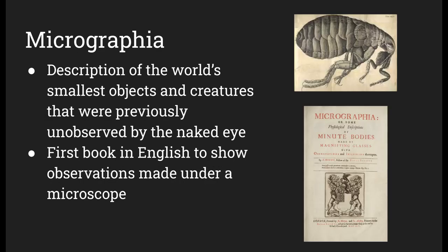Micrographia is one of the books he published. It contains descriptions and illustrations of the world's smallest objects and creatures that were previously unobservable by the naked eye — you'd have to look through a microscope. It was also the first book in English to show observations made under a microscope. The image on the top right is an illustration included in the book, and the bottom right is the cover of the book.